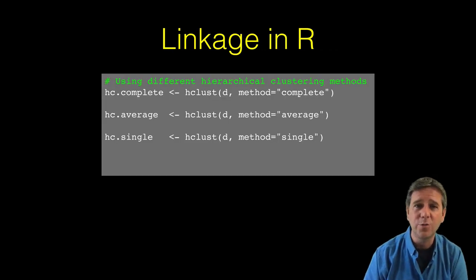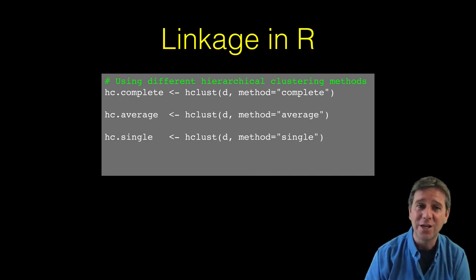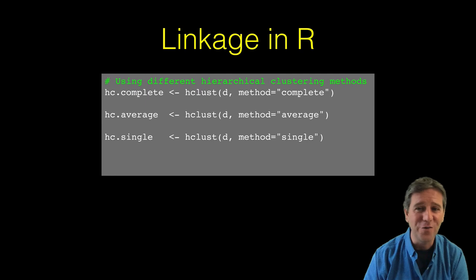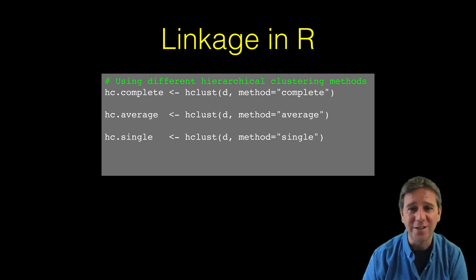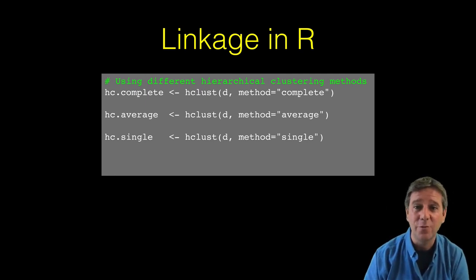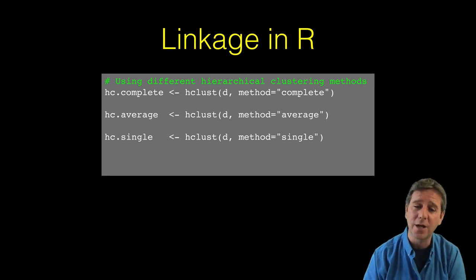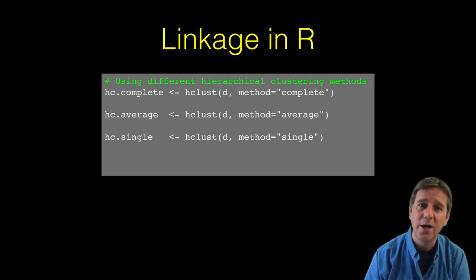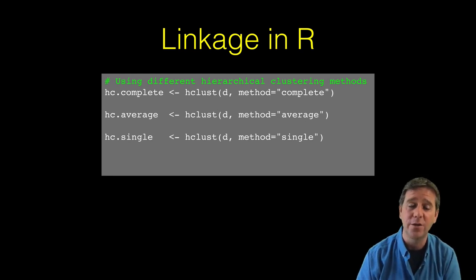In R, as I mentioned, we argue with the hclust function by setting the optional method parameter, which has a default. We can change it to different methods like complete, average, or single. We'll do quite a bit of this in our hands-on section, and I'll encourage you to explore different ones and see how robust our results are.